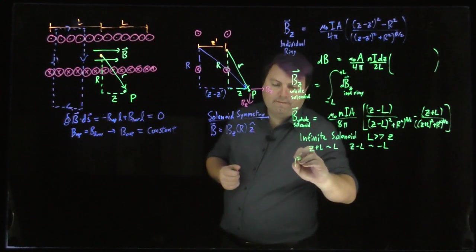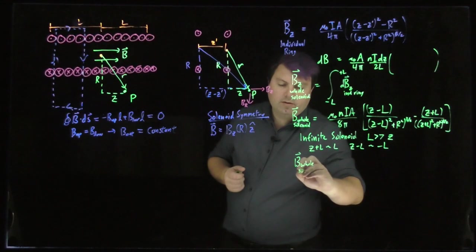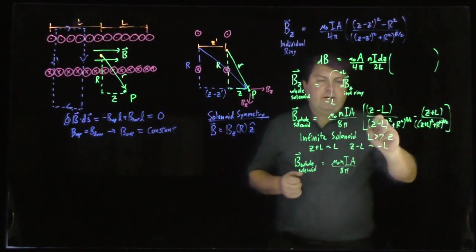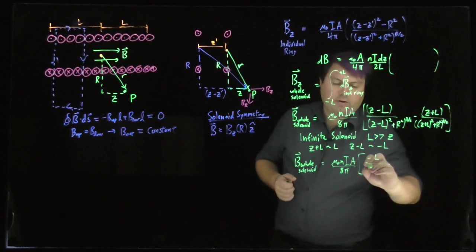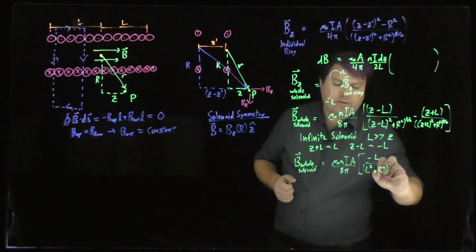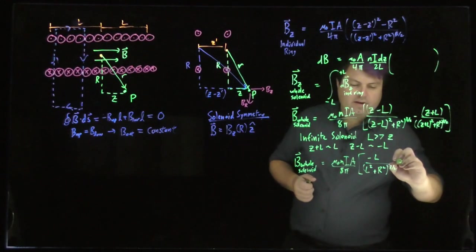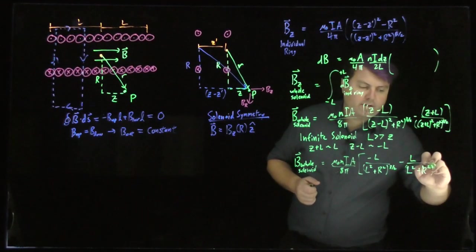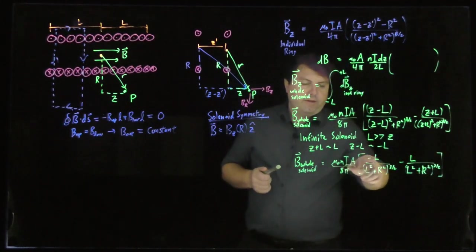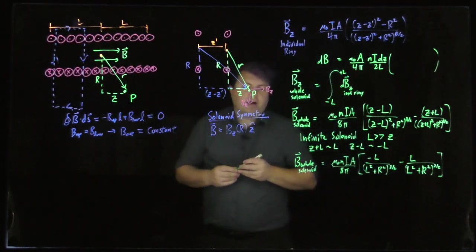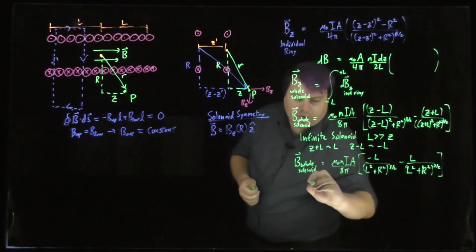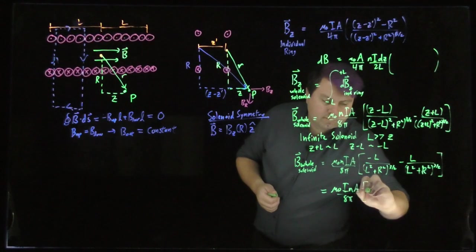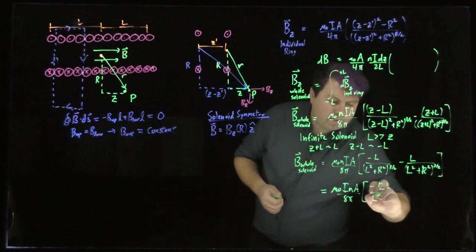So if we do that, then we get the magnetic field of the whole solenoid. Mu naught N IA over 8 pi. And now we have negative L over negative L quantity squared is just L squared plus R squared to the 3 halves. And then we have minus positive L over L squared plus R squared to the 3 halves. So then the L's cancel. We get negative 2L. That can cancel with 2 of the 8, but we don't have to worry too much about it.